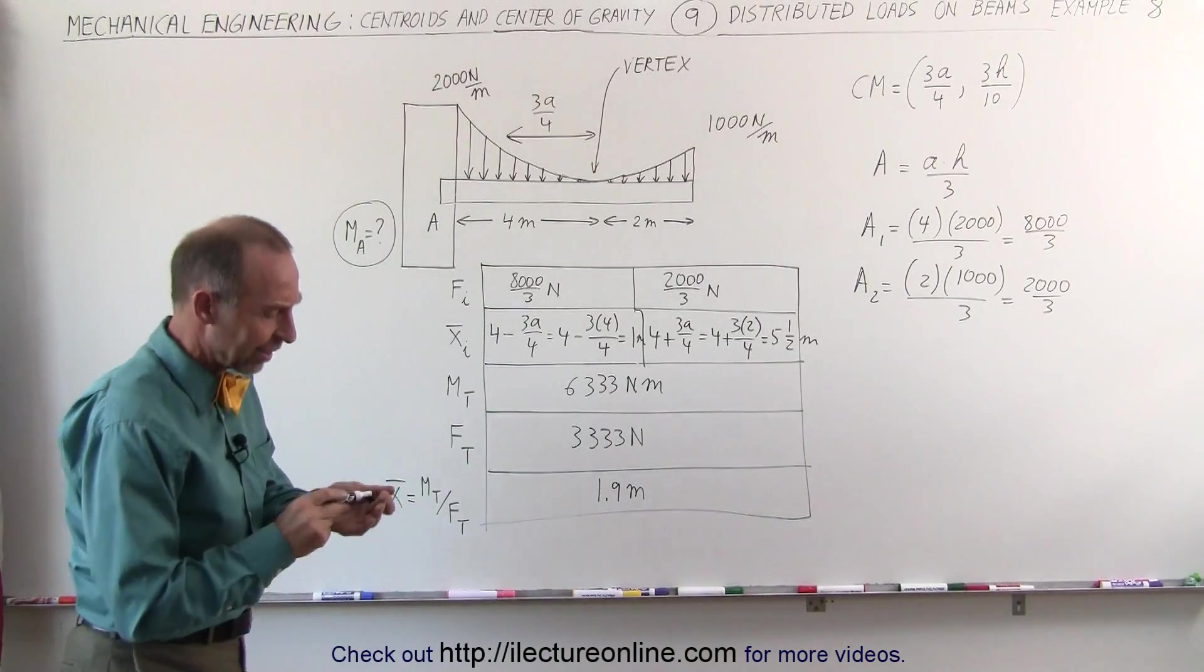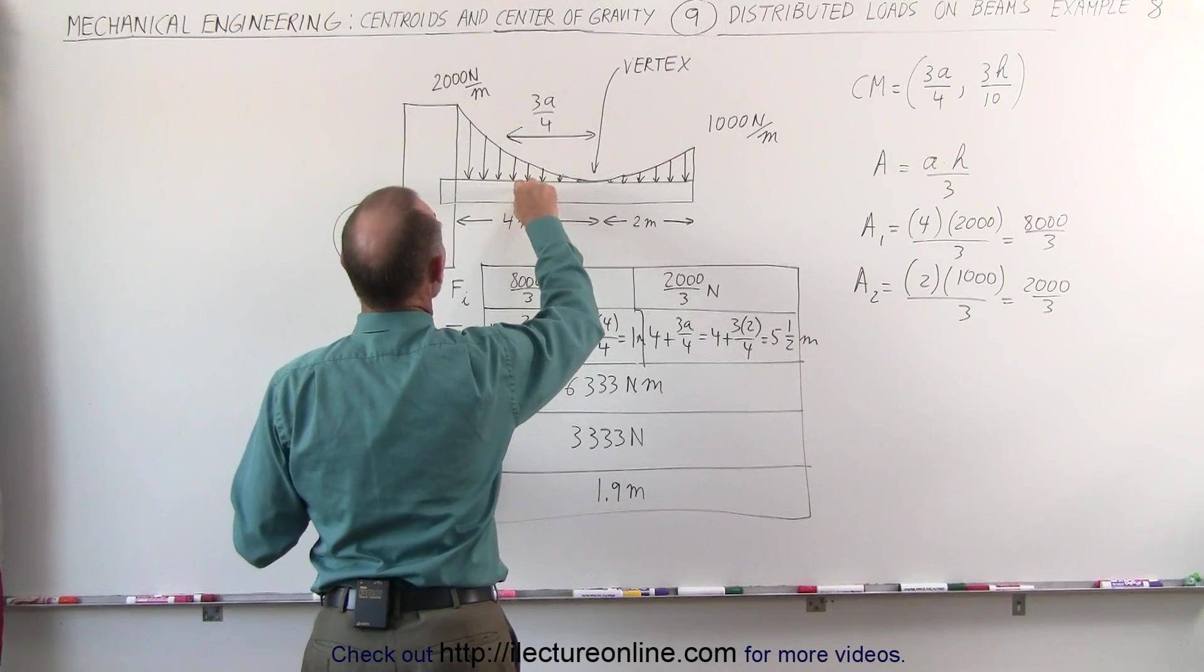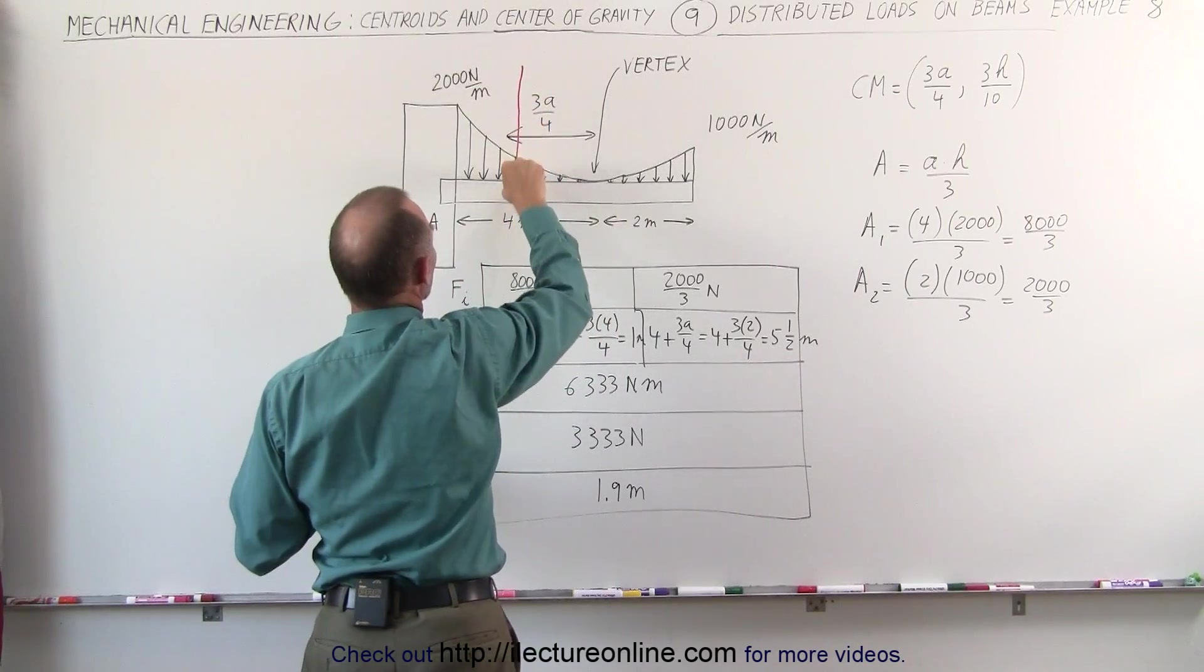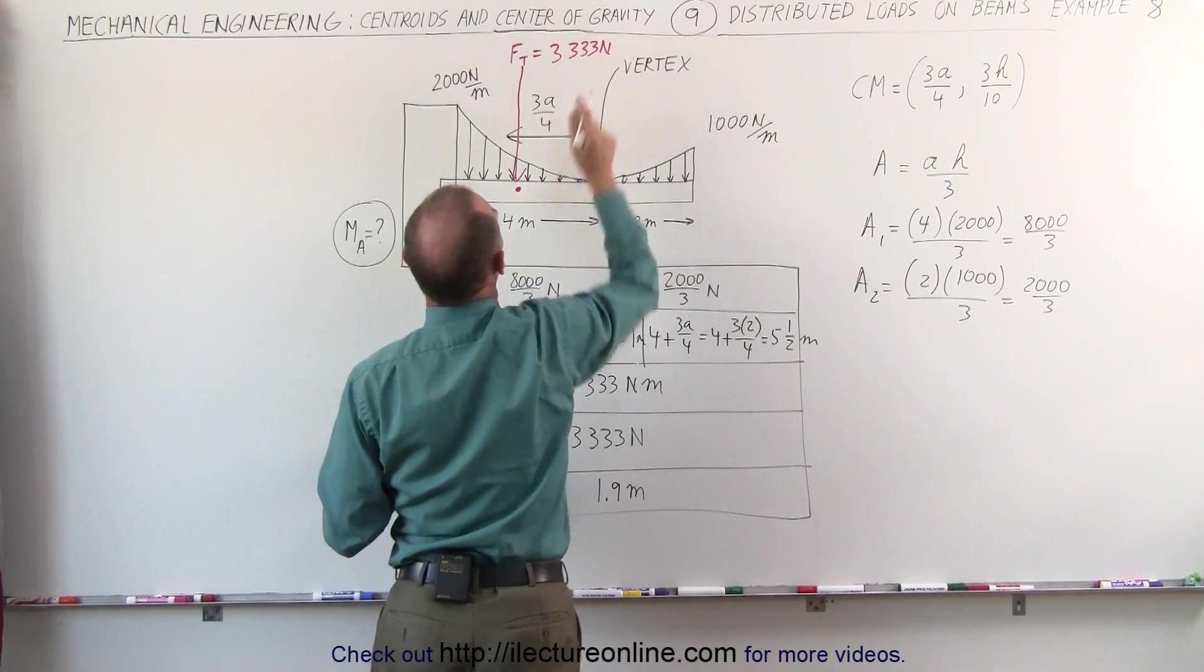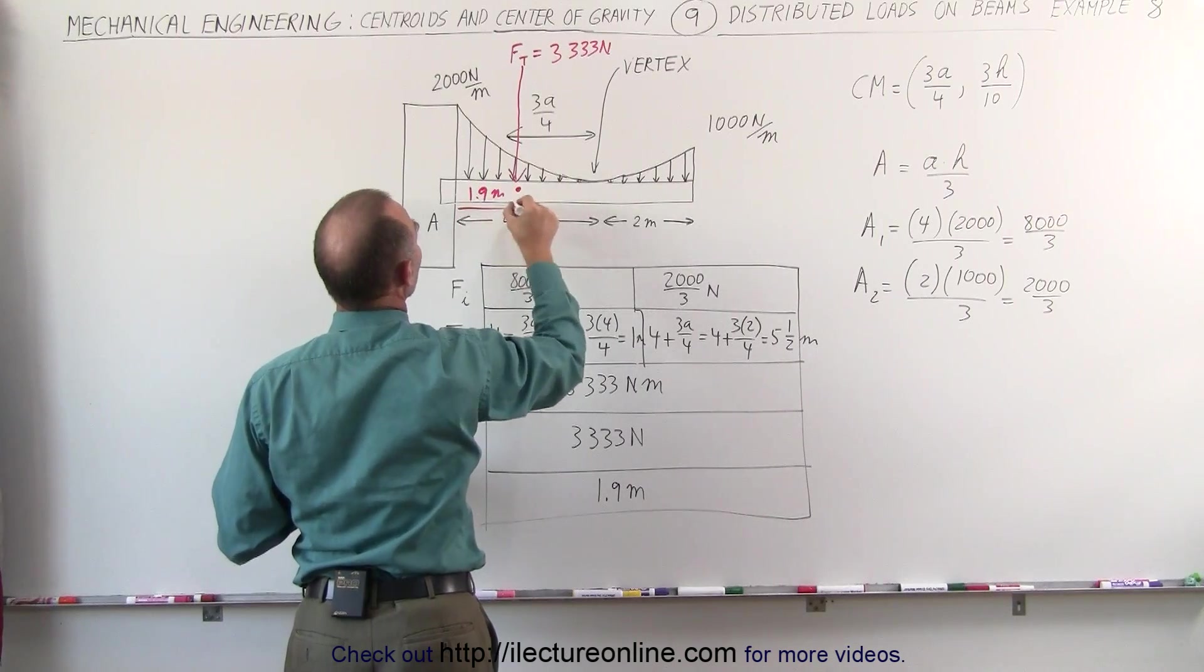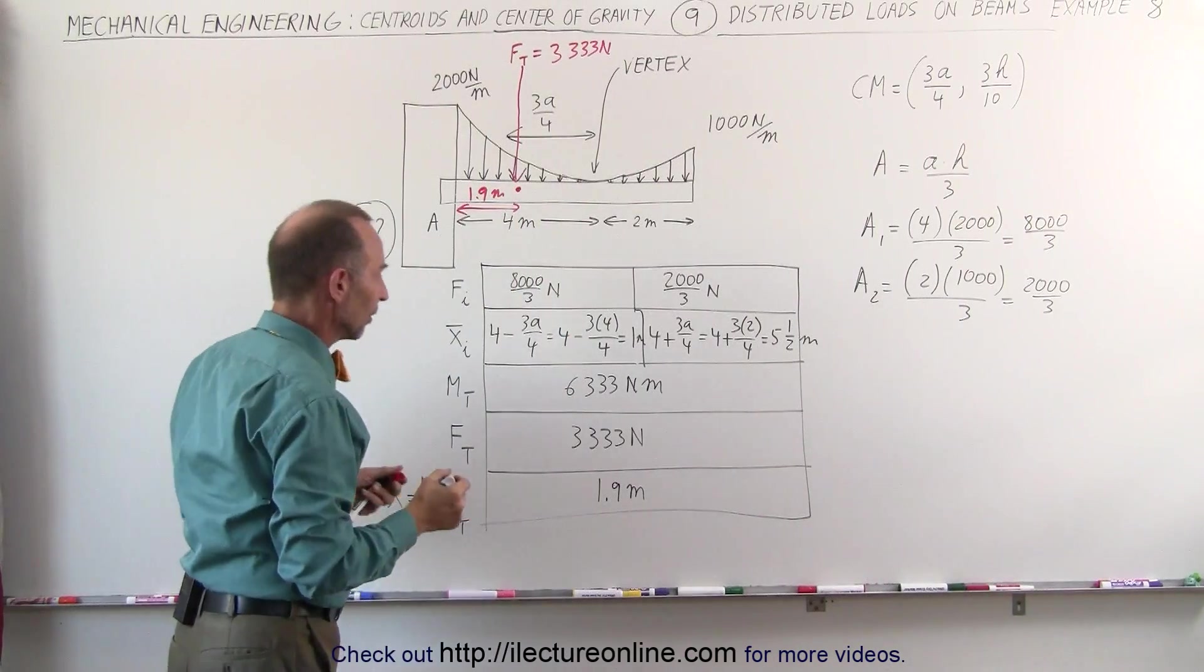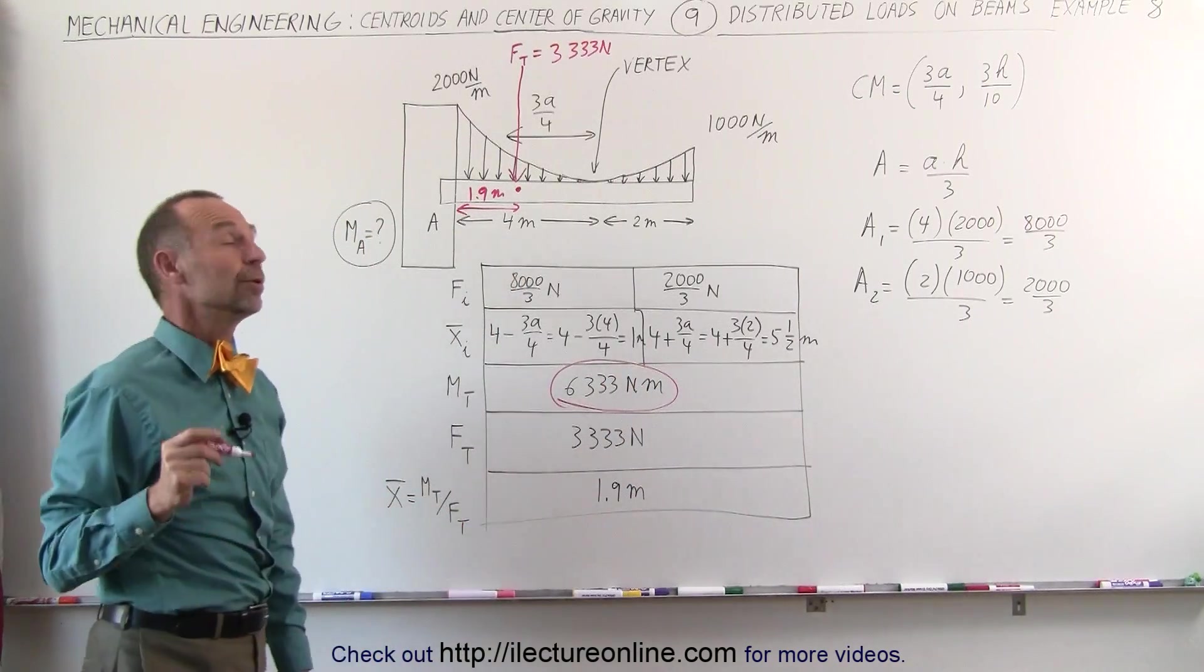So now we can visually see what that looks like. The centroid is right about here, we have a total force contribution of 3,333 Newtons, acting at a distance of 1.9 meters away from point A.